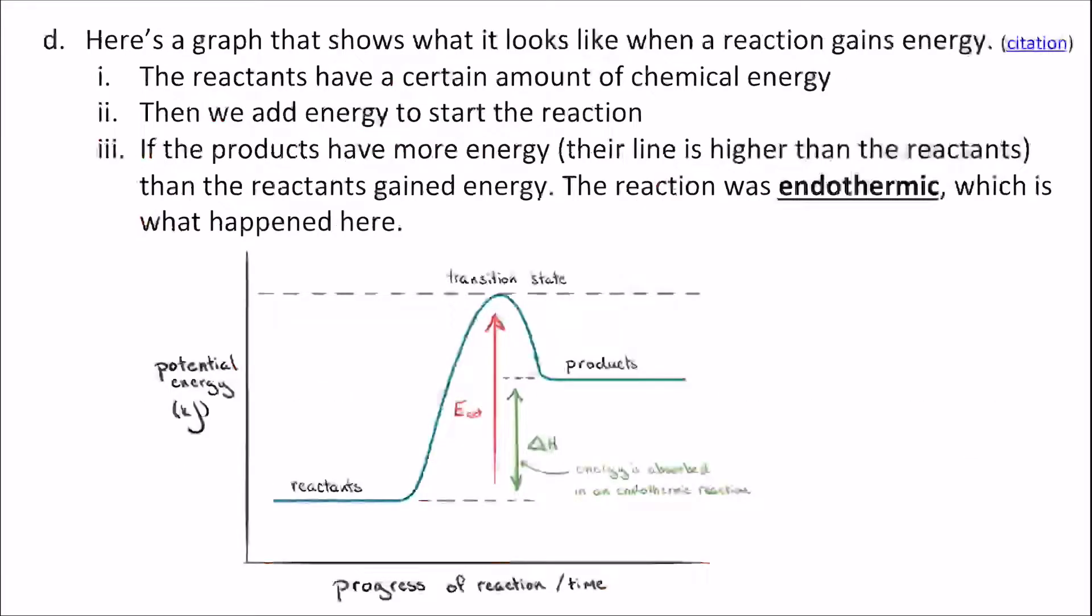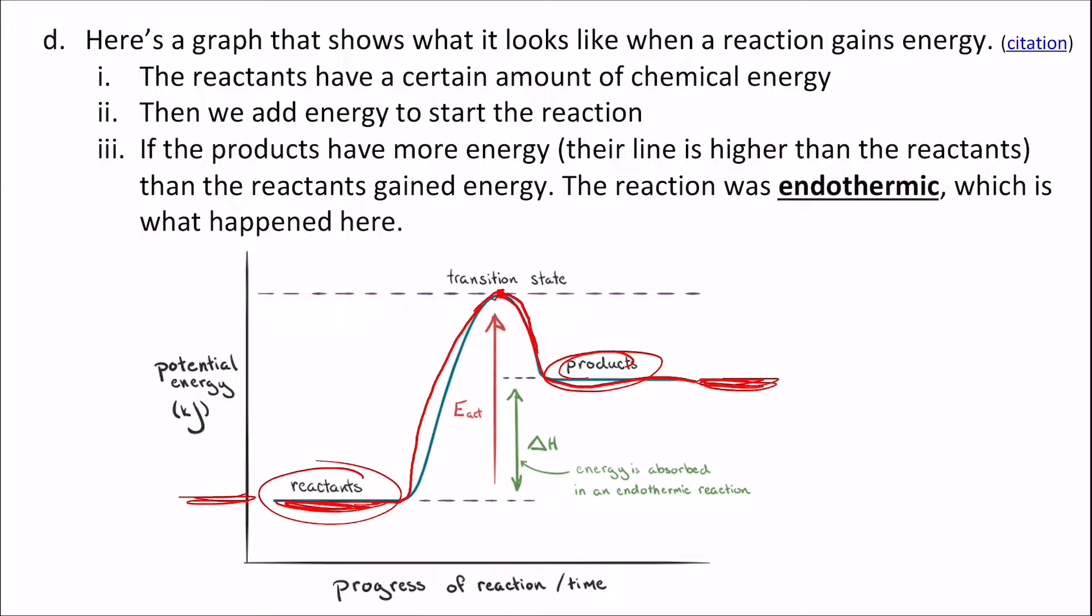Here's a graph that shows what it looks like when a reaction gains energy. The reactants have a certain amount of chemical energy. Then we add energy to start the reaction. So the reactants start off with a certain amount of energy. We need to add more energy. That's what this shows as it goes up until we get to this maximum point right here. And then two things can happen. This one, as you can see, it loses a little bit of that energy. But if you compare the products to the reactants, the products have more energy because they're higher up than the reactants, which are lower on this graph.